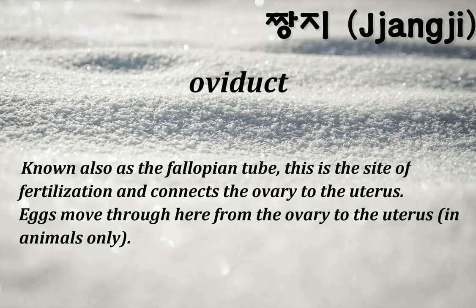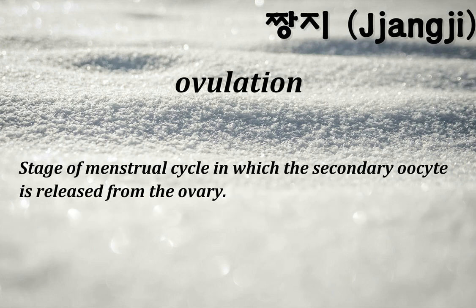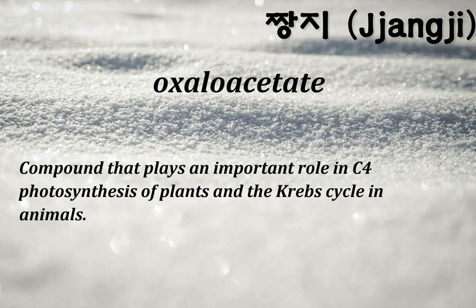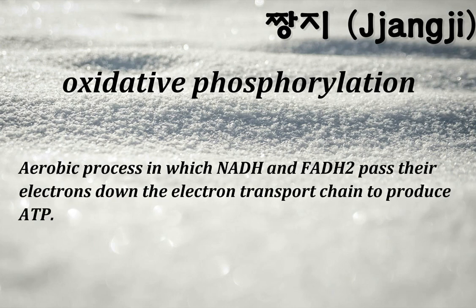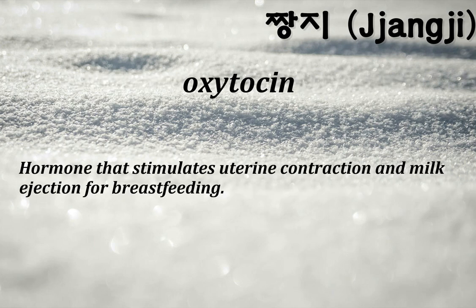Oviduct (fallopian tube): the site of fertilization that connects the ovary to the uterus; eggs move through here from the ovary to the uterus in animals only. Ovulation: stage of menstrual cycle in which the secondary oocyte is released from the ovary. Oxaloacetate: compound that plays an important role in C4 photosynthesis of plants and the Krebs cycle in animals. Oxidative phosphorylation: aerobic process in which NADH and FADH2 pass their electrons down the electron transport chain to produce ATP.